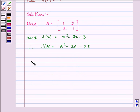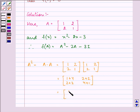Now, let us find out A squared. It will be A into A, that is equal to matrix A getting multiplied by matrix A. The answer comes out to be 1 plus 4 which is 5, 2 plus 2 which is 4, 4, and 5. This is the value of A squared.